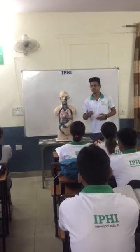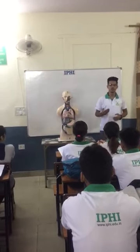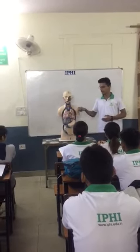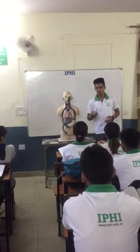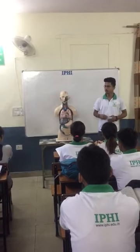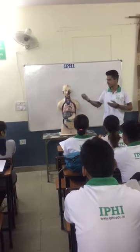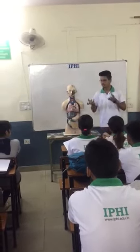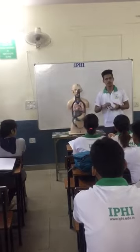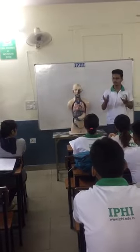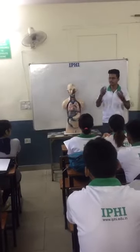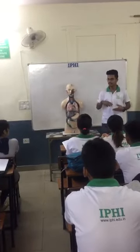Our digestive system starts from the mouth itself. When we take our food in the mouth, there are glands like the salivary gland which mix up with the mouth and make it soft so that it can be easily taken.